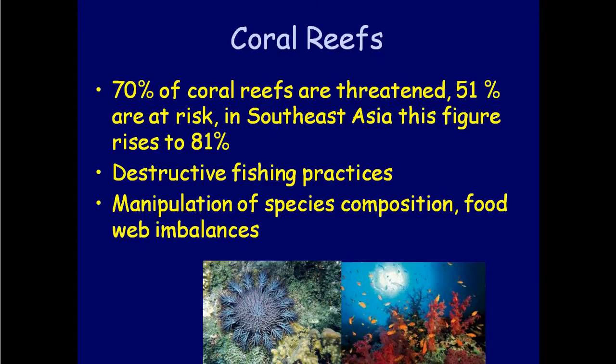Coral reefs: 70% are threatened, 51% are at risk, and in Southeast Asia that rises to 81%. A lot of that has to do with overfishing in ways that actually destroy the corals themselves — destroying habitat through things like cyanide fishing for live fish or fishing with explosives. This causes imbalances in the food web, especially when removing forage species or top predators.